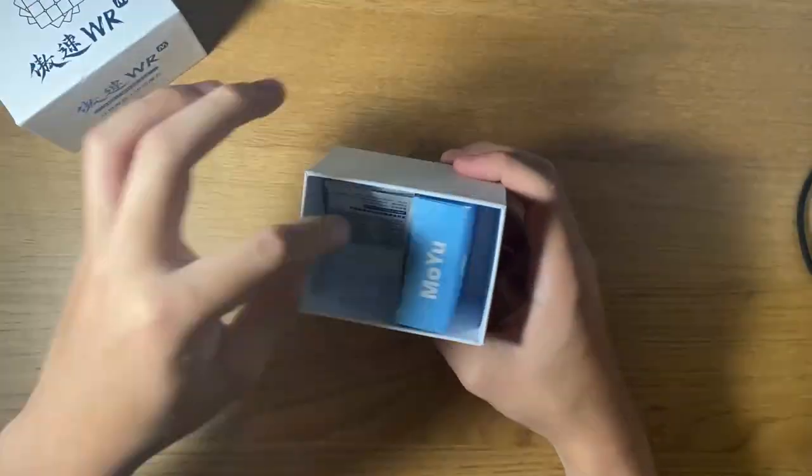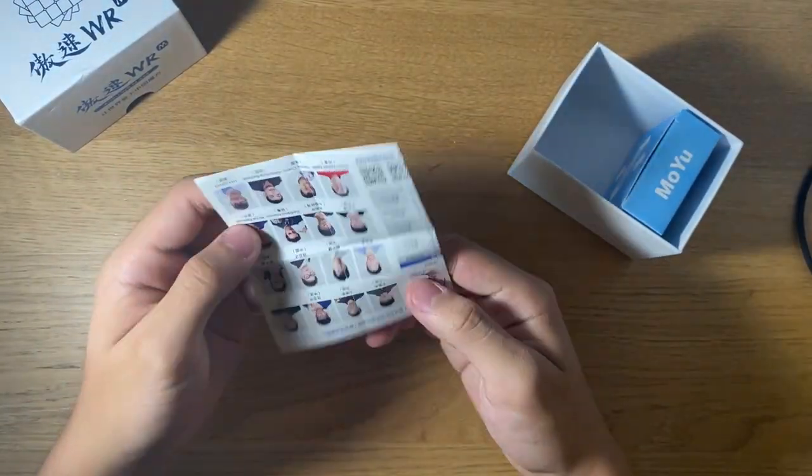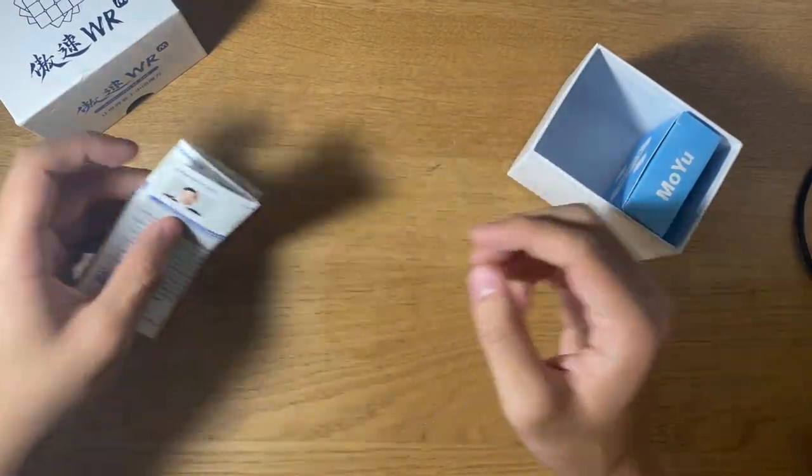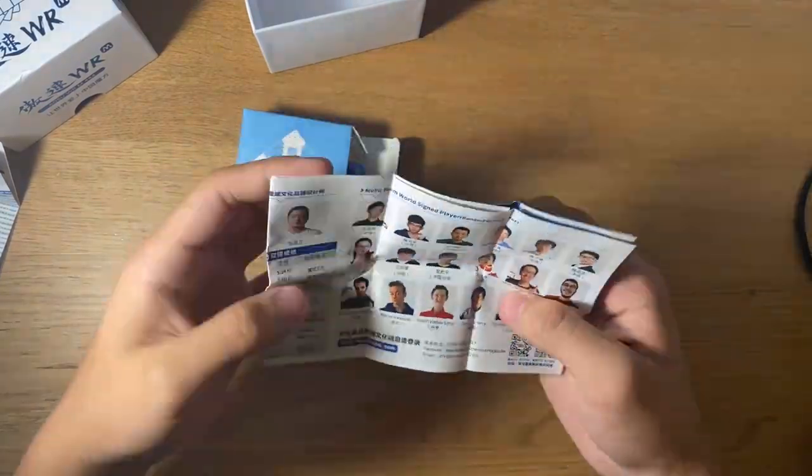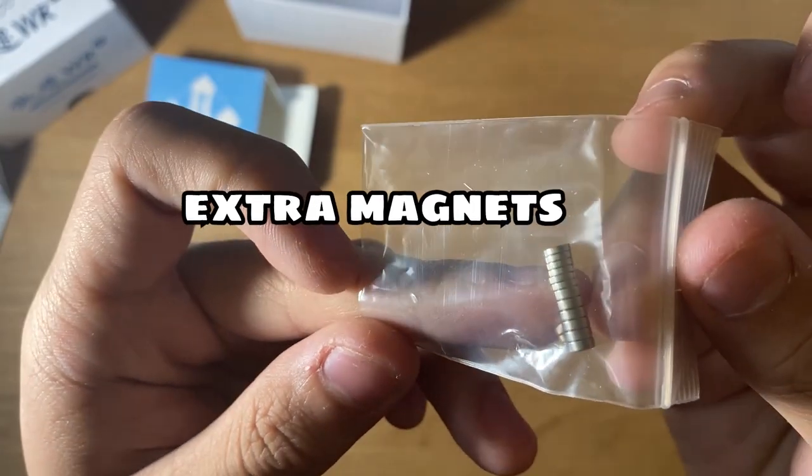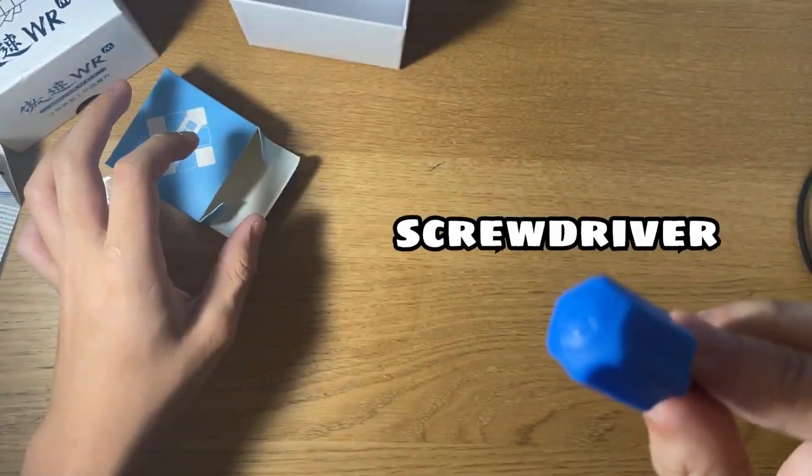Inside the box, we find a sheet which shows the Moyu team. Oh look, it's Luke Garrett and Tony Cherry. And inside the accessory box, we have a pamphlet, some extra magnets, and a screwdriver.